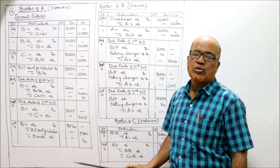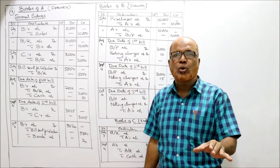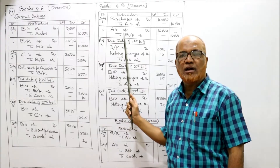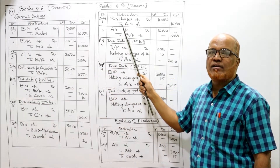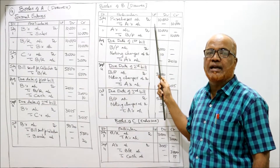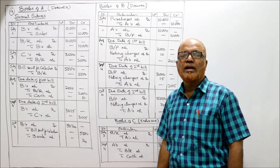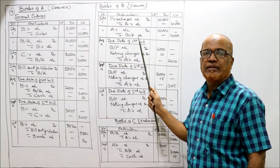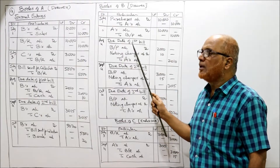Now general entries in the books of B. On July 1st, B purchased goods from A: purchase account debit to A's account 10,000, being goods purchased on credit. B accepted three bills, so entry: A's account debit to bills payable — three bills of 2,000, 3,000, 5,000 totaling 10,000, being three bills accepted.